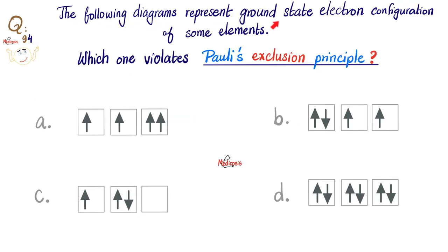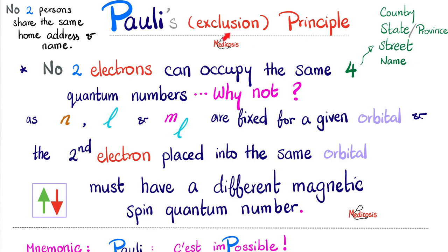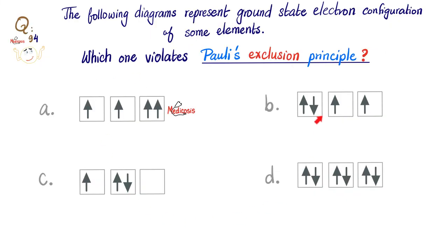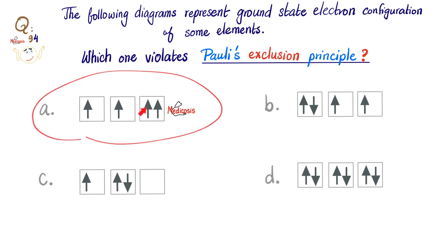The following diagrams represent ground state electrons. Which one violates Pauli's exclusion principle? Pauli said no two electrons can occupy the same state; therefore if two electrons are in an orbital, one must spin +½ and the other −½. They cannot both spin up and cannot both spin down. The answer is A, because it shows two electrons with the same positive spin — that's incorrect. One should be up and the other down.